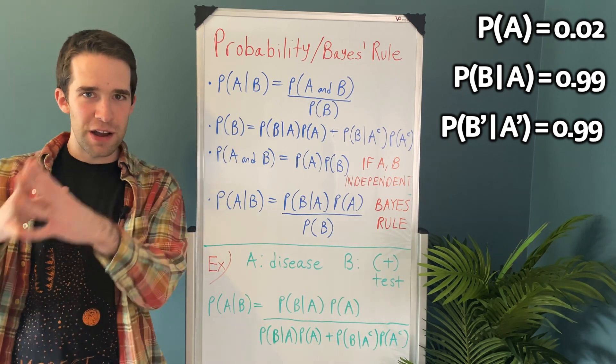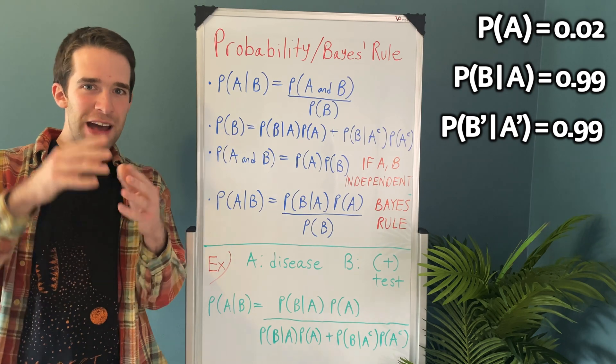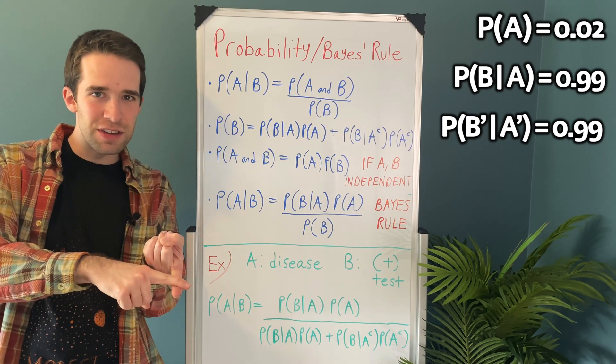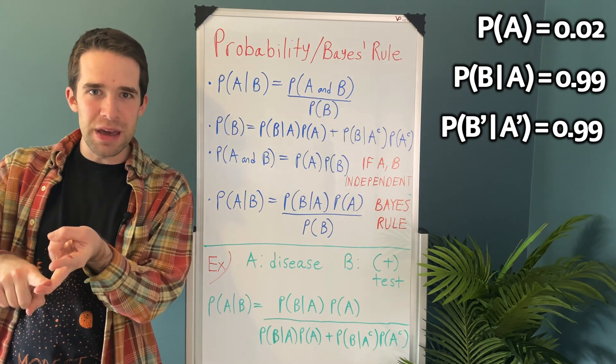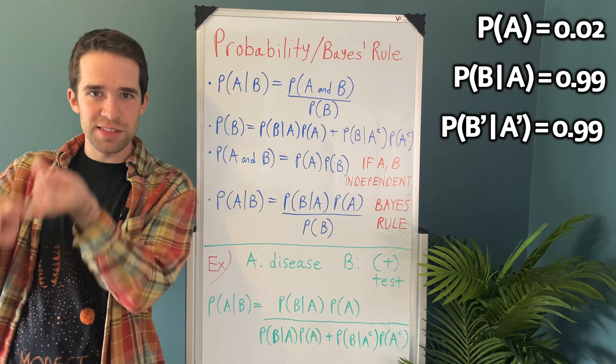Let's just start by defining the two events. We have event A, and that's having the disease, and we have event B, and that's having a positive test.